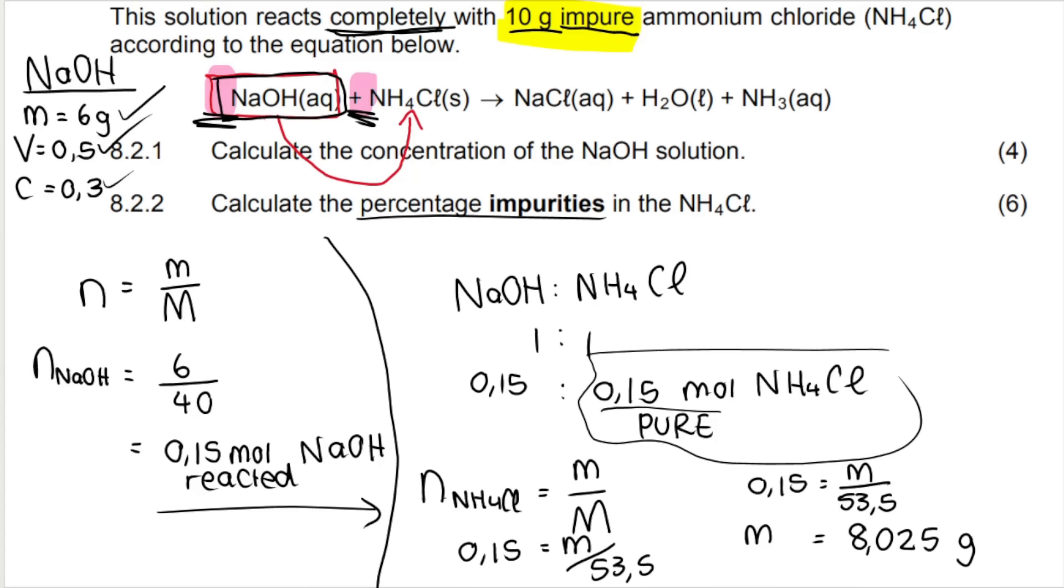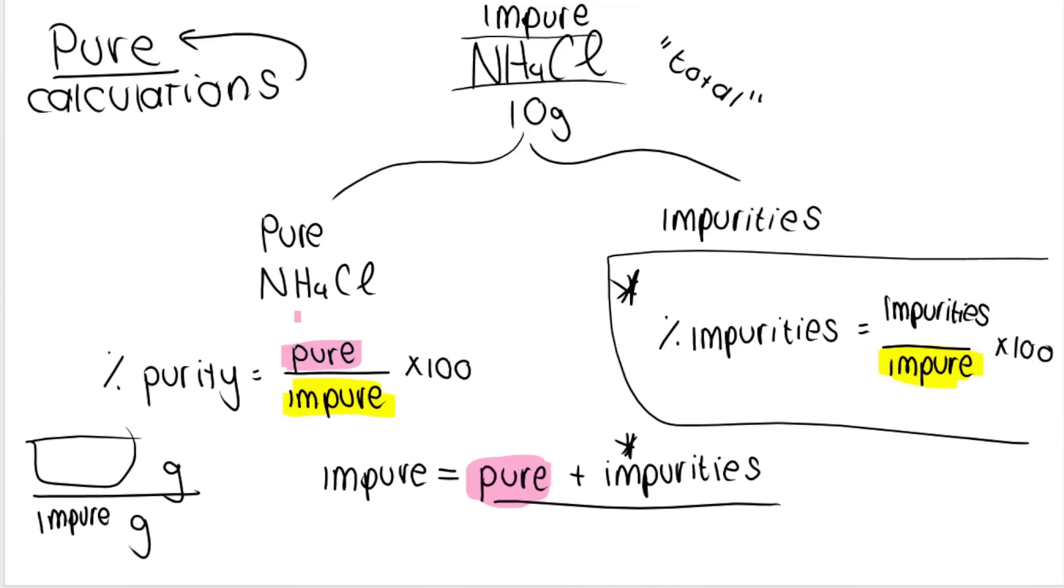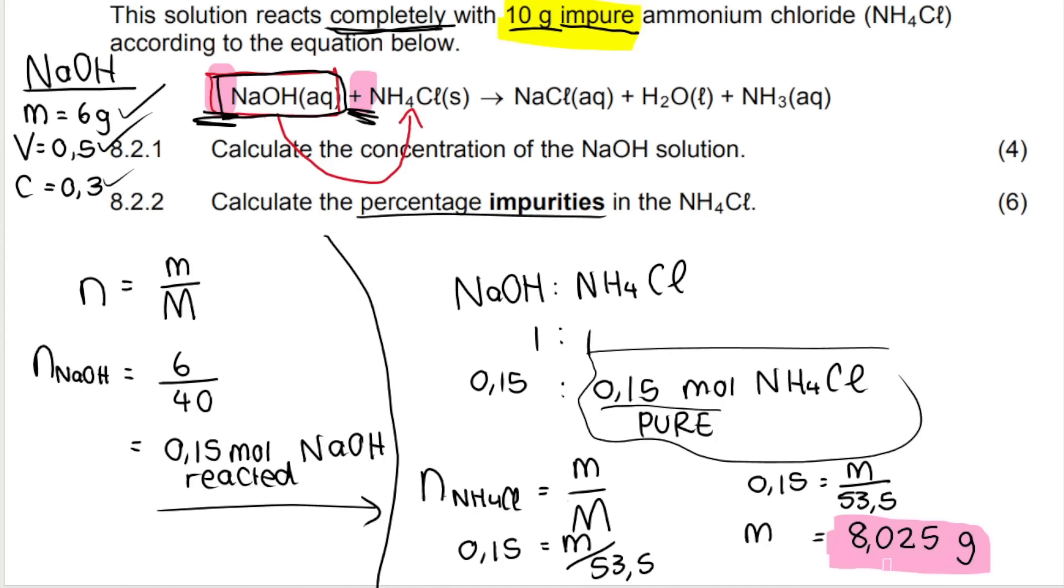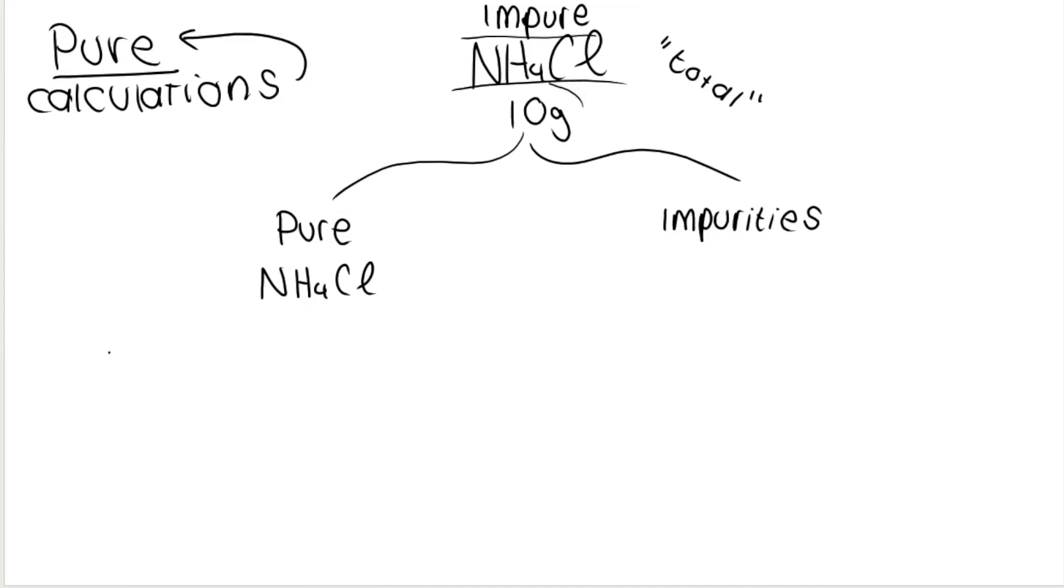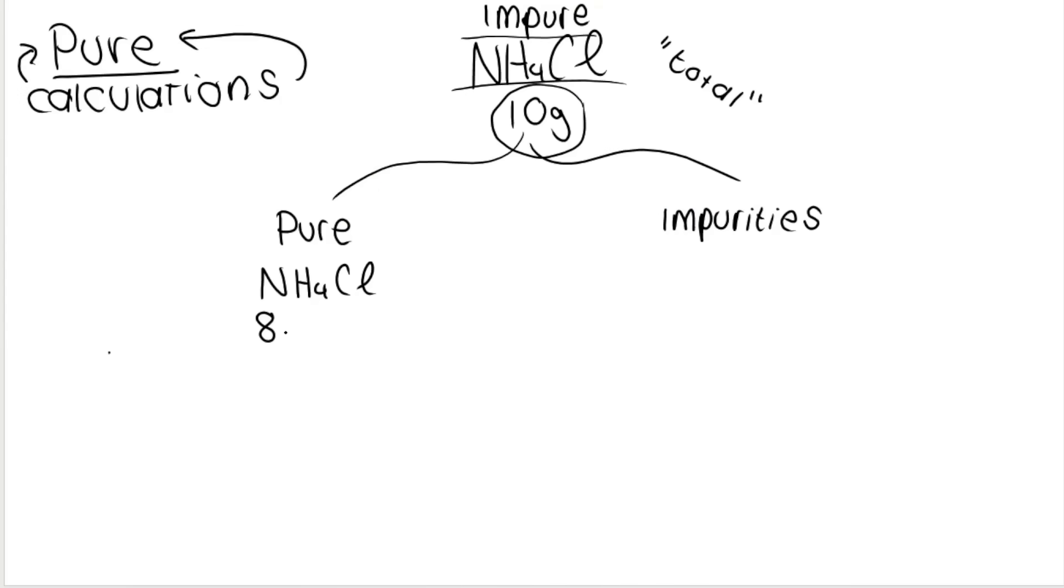The mass that we calculate using stoichiometry, our calculations, our mole ratio, and then our formulas, this mass is pure. So our stoichiometry, our calculations always give me the pure mass. So what we have according to calculations is the following. 10 grams is my total, my impure. It was given in the question. Then according to my stoichiometry, I got 8.025. The calculations will always give me the pure. So 8.025 grams is pure. So if 10 grams is the total and 8.025 grams is pure, how much is the impurities? Well, you take the total minus what is pure, and that gives me the amount of impurities: 1.975 grams.